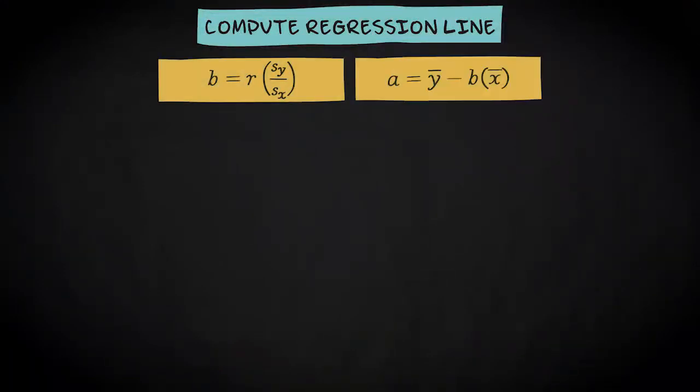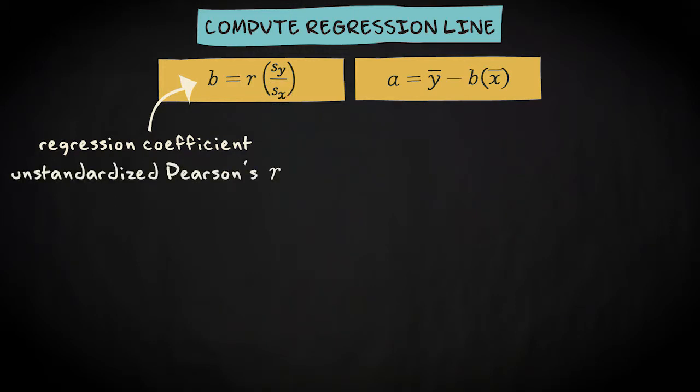This formula and this formula. The first formula computes the regression coefficient by multiplying Pearson's r with the standard deviation of y divided by the standard deviation of x. This shows that the regression coefficient is in fact an unstandardized version of the Pearson's r. When the Pearson's r equals zero, the regression coefficient equals zero. When the Pearson's r is a positive number, so is the regression coefficient. And when the Pearson's r is negative, the regression coefficient is negative as well.